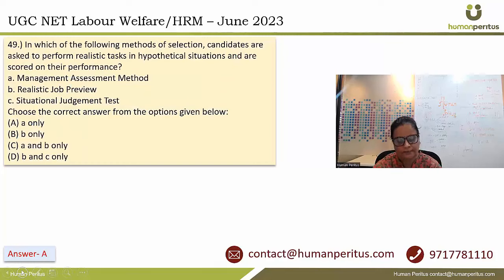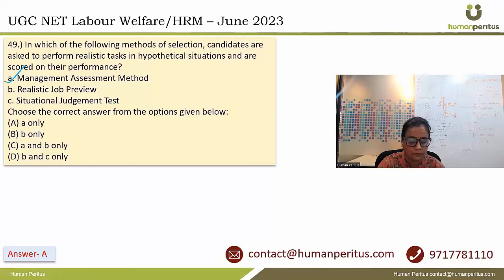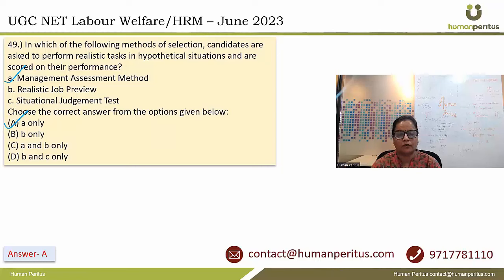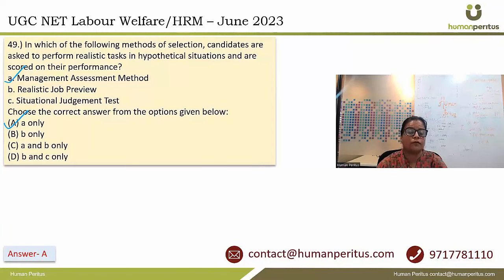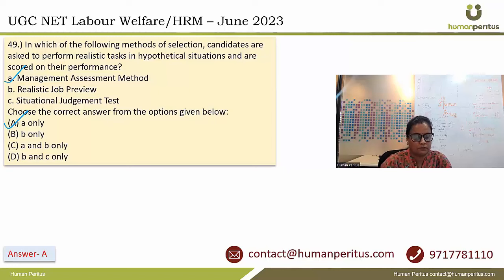In which selection method are candidates asked to perform realistic tasks in hypothetical situations and scored on their performance? The answer is option A — management assessment method. In this method, candidates are given realistic tasks and asked to perform in hypothetical situations, and their performance is scored. This is different from a situational judgment test, where candidates choose the best course of action from a set of options provided.